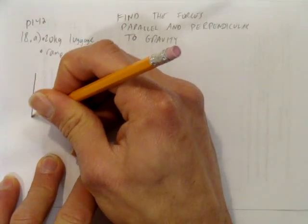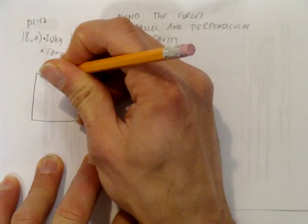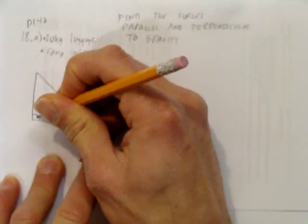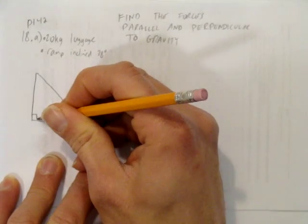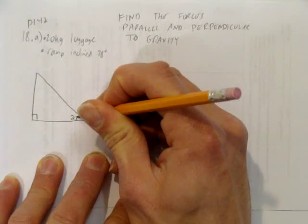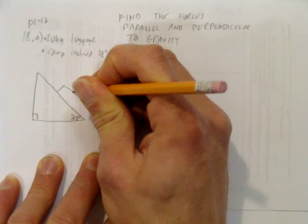So we start by drawing a diagram. That's a pretty steep looking 28 degrees. Nonetheless, here is the right angle. This is 28 degrees, and we have our piece of luggage here.